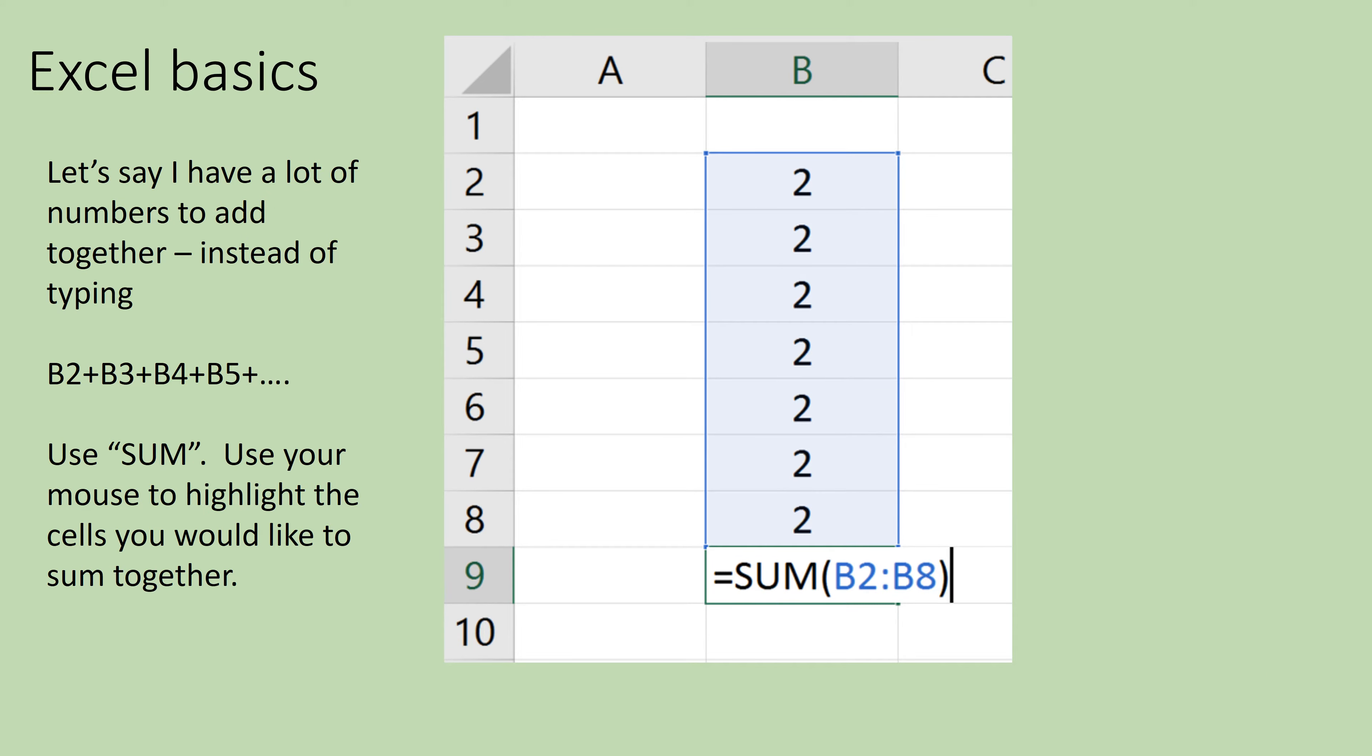There are several different functions that you can use with Excel. Sum is one of those functions. So instead of saying B2 plus B3 plus B4, if you want to just add everything in this entire column together, say equals capital S-U-M parentheses, and then just click and drag your mouse to highlight the cells you want in your sum command, close parentheses, enter, and it will add all of the numbers in this column together.